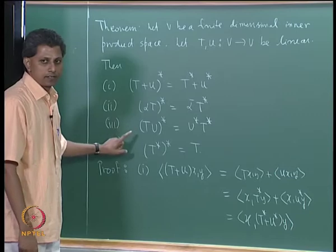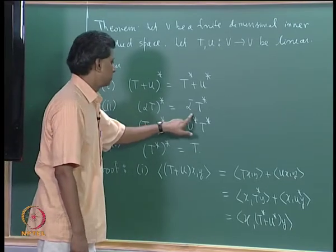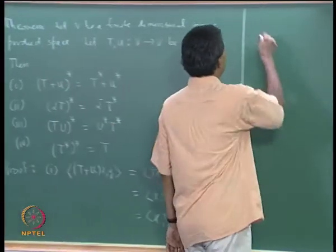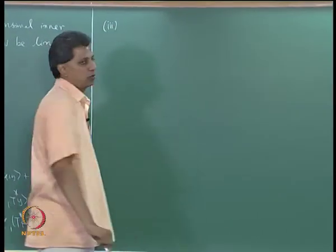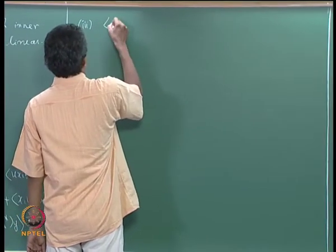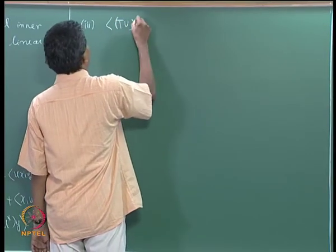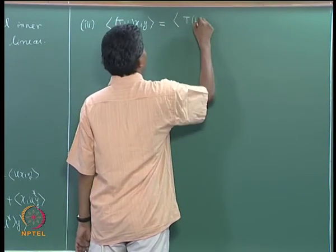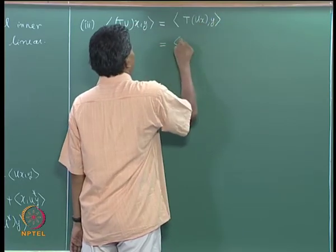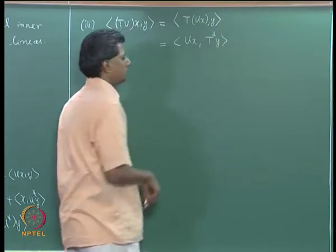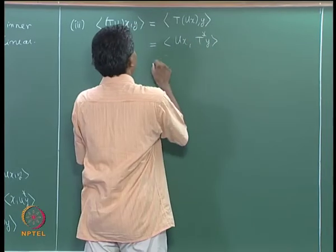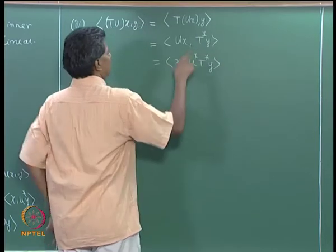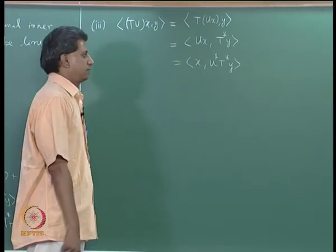The second property is similar and straightforward — it comes with a conjugate — so I will leave it. Let me prove the third one. Consider ⟨(TU)x, y⟩. Since TU is a composition, this equals ⟨T(Ux), y⟩, which by definition of T* equals ⟨Ux, T*y⟩, and then by definition of U* equals ⟨x, U*T*y⟩.